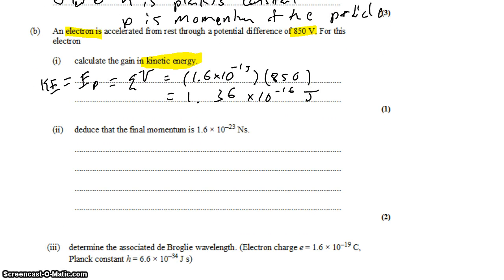Next, we want to find the final momentum. There's a couple of ways to do it, a long way and a short way. The long way is to use the kinetic energy to find the velocity, then use the velocity to find the momentum. There is a shortcut.